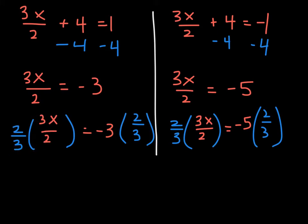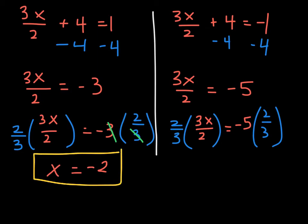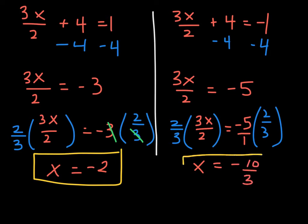On the right side, 3 and 5 share no common factor. Negative 5 is really negative 5 over 1, so multiplying straight across gives x equals negative 10/3. That is your second solution: x equals negative 2 or x equals negative 10/3.